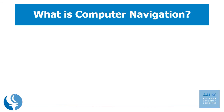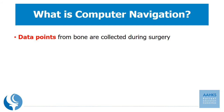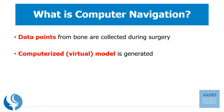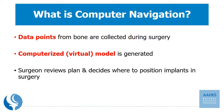Computer navigation is the process by which the computer helps the surgeon complete the surgery. During the navigation process, data points are collected from the ends of the bone in order to make a computerized model of a patient's particular hip or knee joint. From here the surgeon reviews the plan and determines where to cut, how to place the implant, and how to best align the arthritic joint. In all, computer navigation enables a highly specific and customized plan for the surgeon.